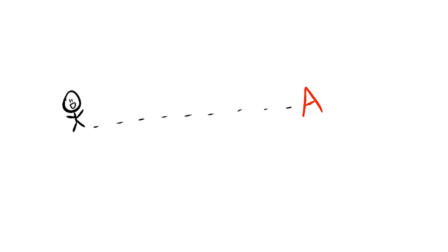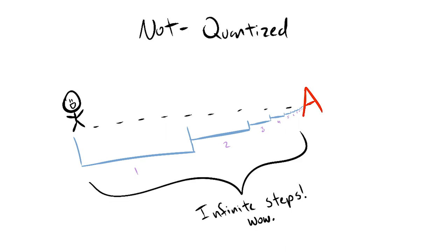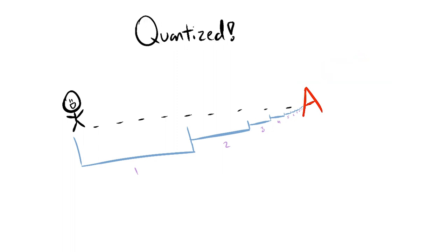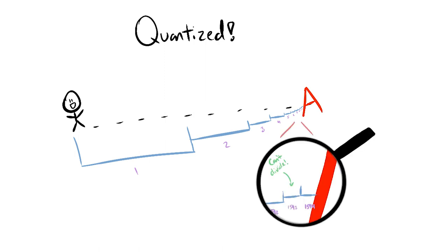Imagine if you wanted to get to destination A and decided to approach it by walking half the distance between you and A for each step. If space wasn't quantized, you could infinitely divide the distance in half, and you would never truly reach point A. But with the quantization of space, you eventually wouldn't be able to divide the distance anymore, and would be pushed to reach point A.